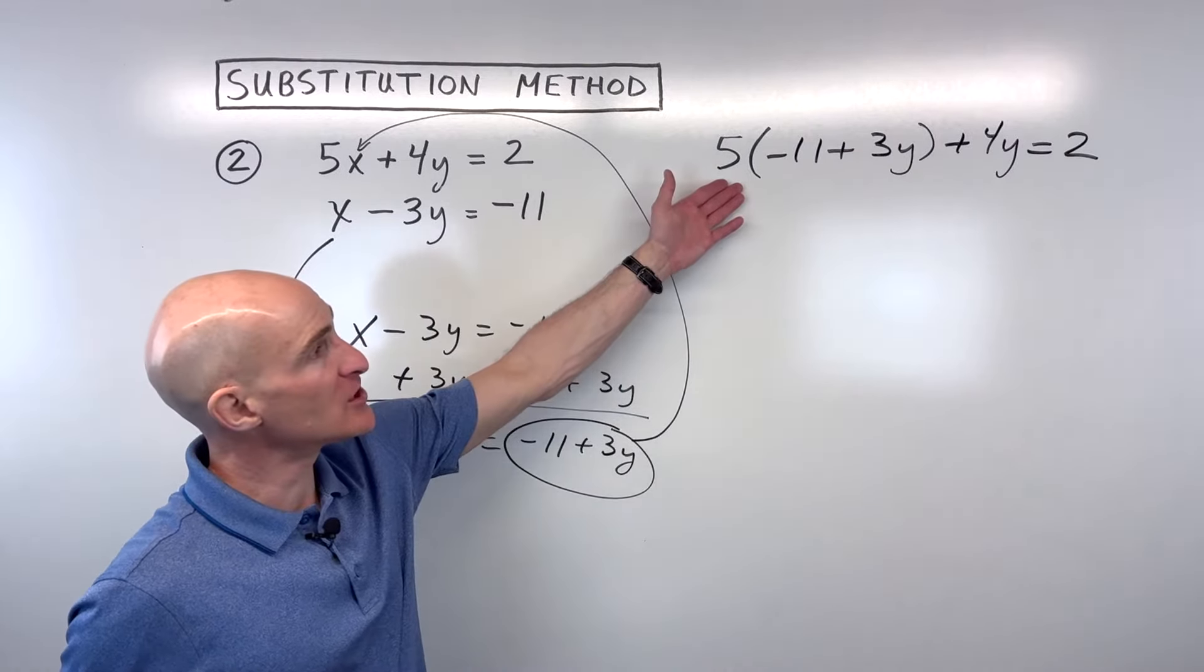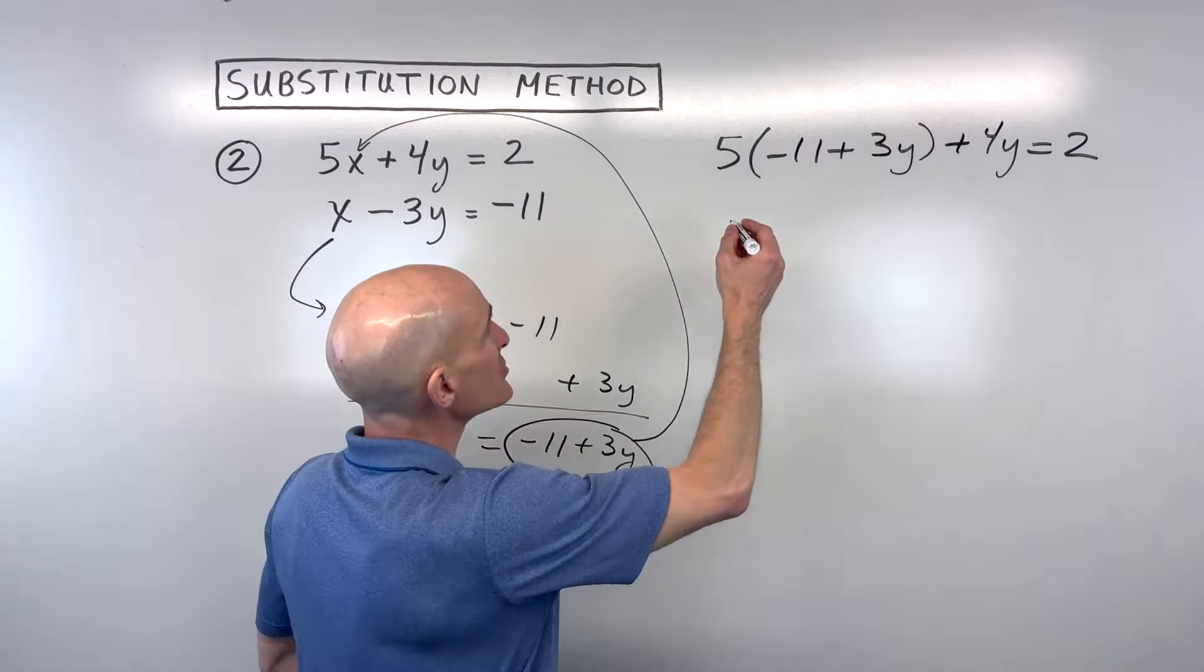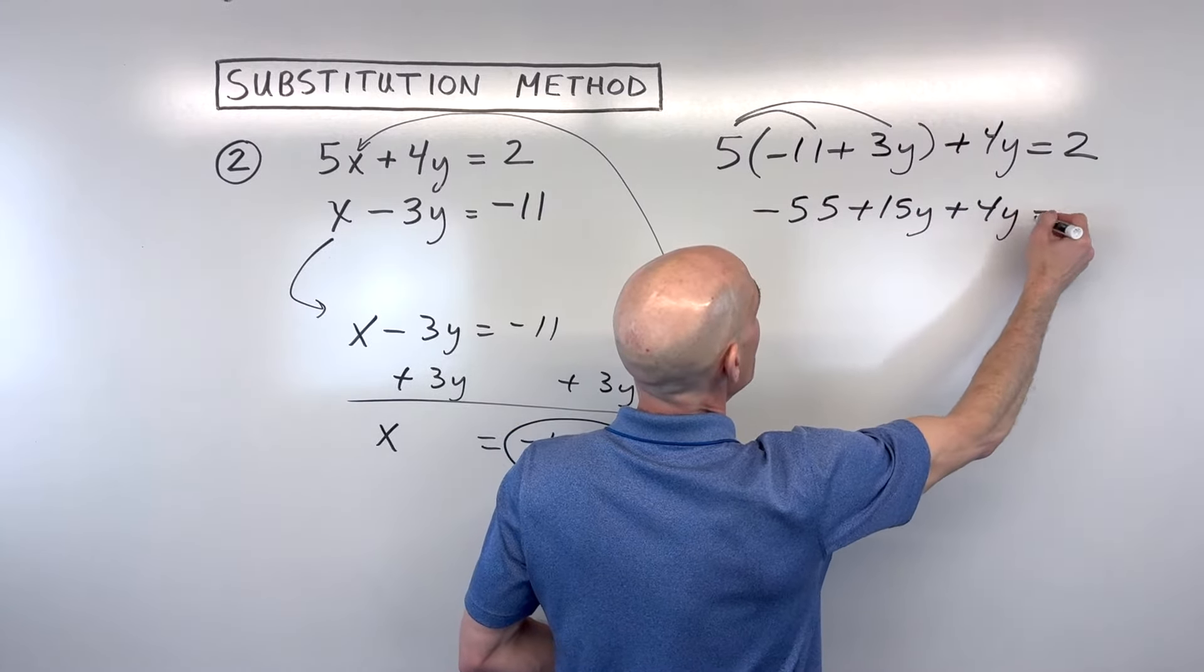So now we just have one equation with y's in it. We can solve for y. We're going to start off by simplifying or doing our distributive property. That gives us negative 55 plus 15y plus 4y is equal to 2.